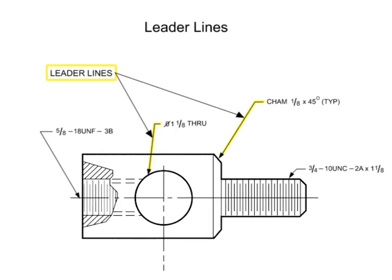Leader lines are used to indicate a part or portion to which a number, note, or other reference applies, and are typically unbroken lines, terminating in an arrowhead. The most common use is when a dimension won't fit within the dimension line.